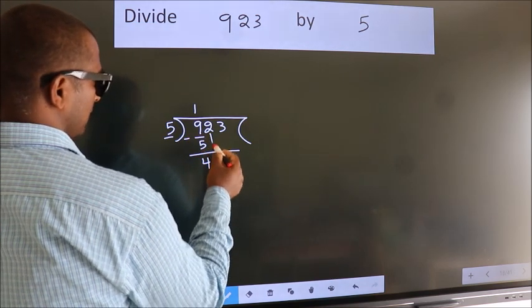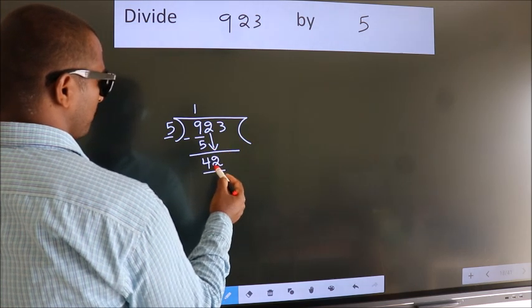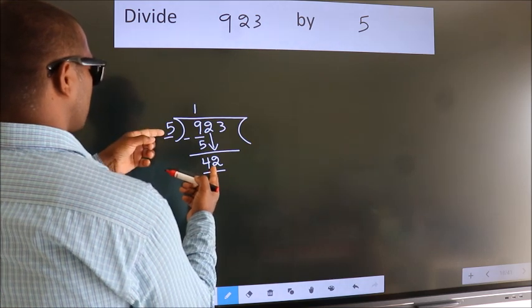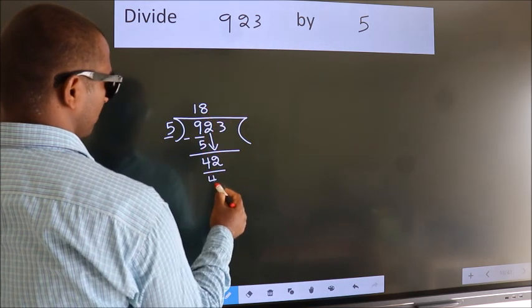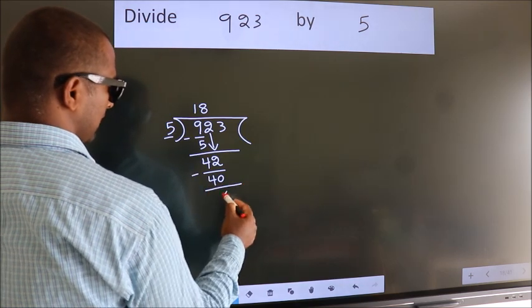After this, bring down the next number. So, 2 down. 42. A number close to 42 in the 5 times table is 8 times 5 is 40. Now, we subtract. We get 2.